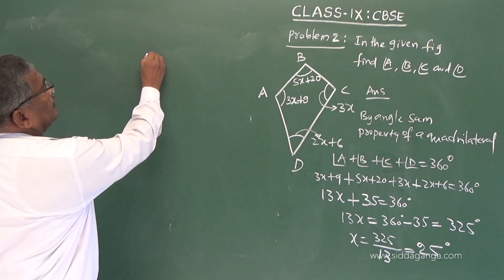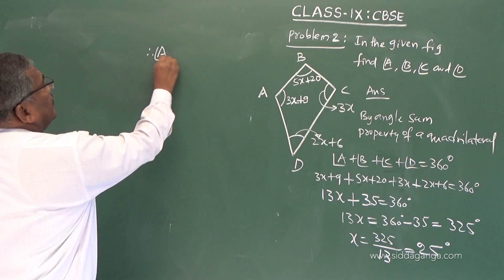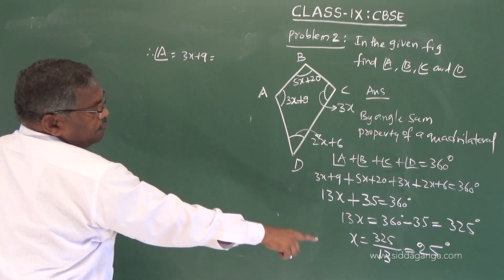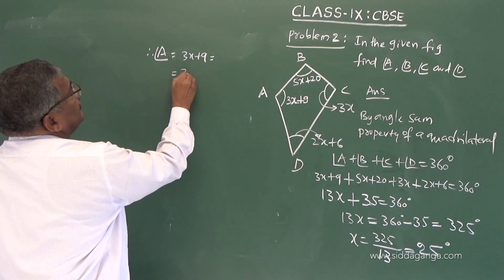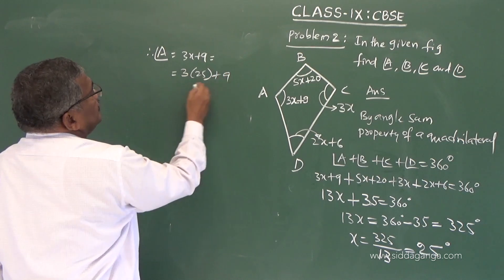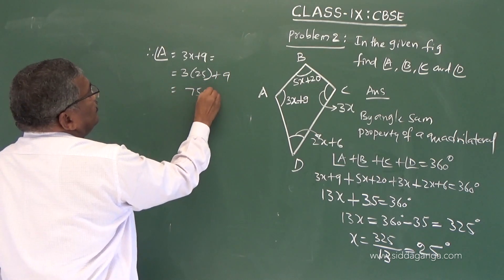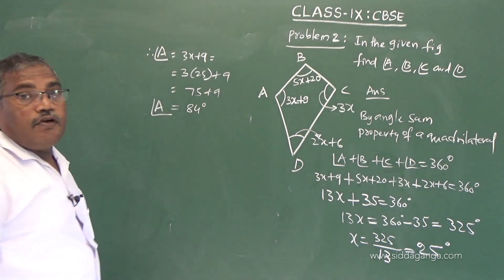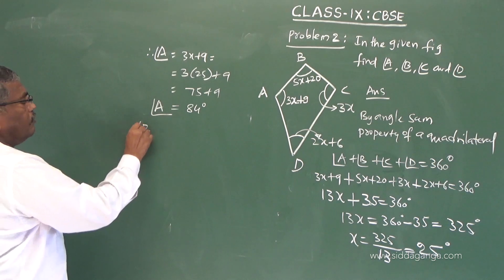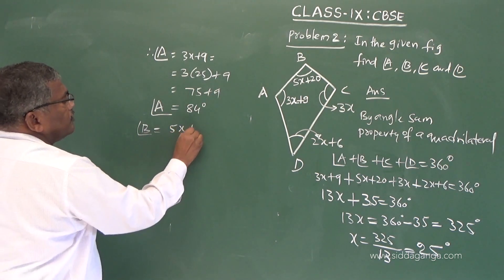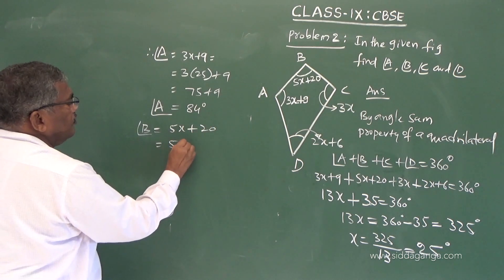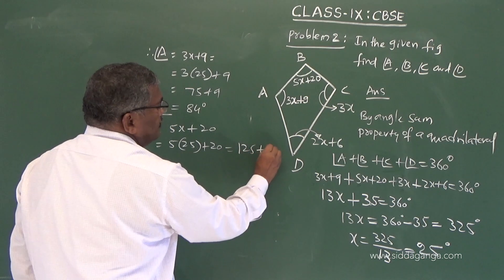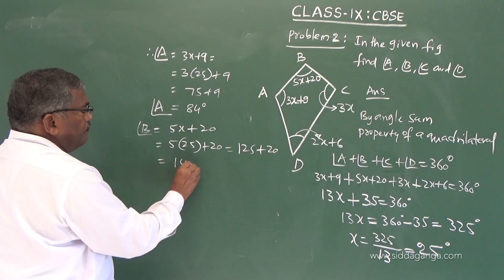Therefore, angle A equals 3x plus 9, which is 3 into 25 plus 9, giving 75 plus 9 equals 84 degrees. Angle B equals 5x plus 20, which is 5 into 25 plus 20, giving 125 plus 20 equals 145 degrees.